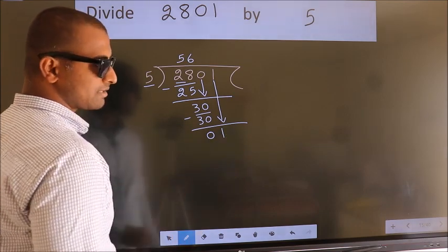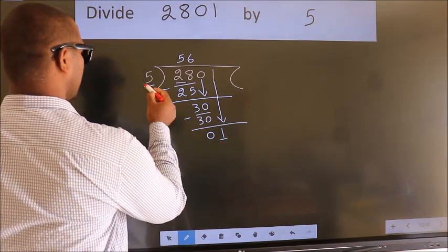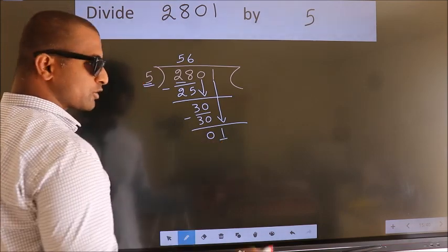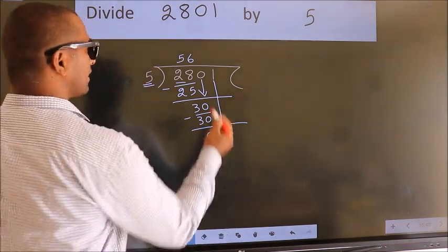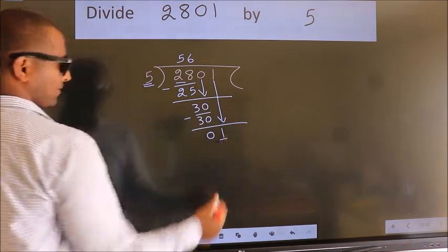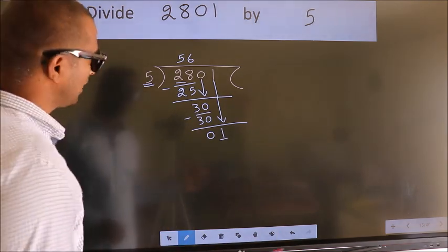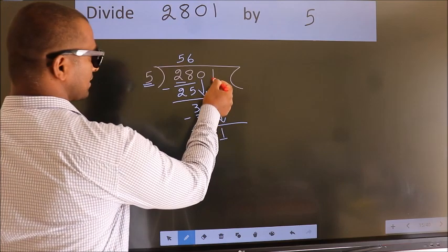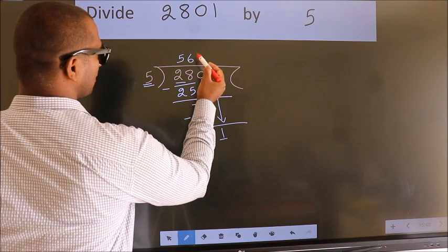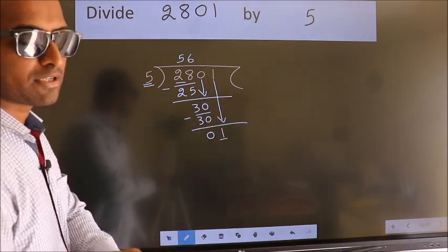the mistake happens. And the mistake is this: here we have 1, here 5. 1 is smaller than 5, so what many do is they directly put dot take 0, which is wrong. Why is it wrong? Because just now you brought this number down and in the same step you want to put dot take 0, which is wrong.